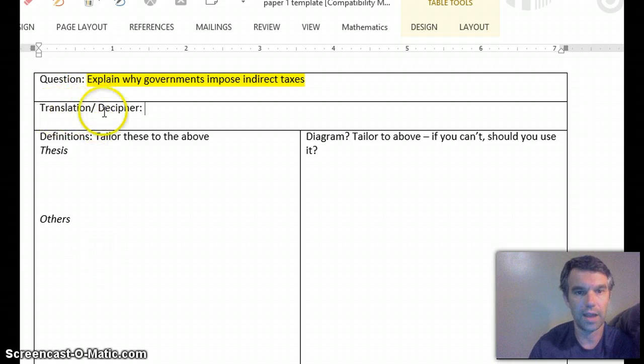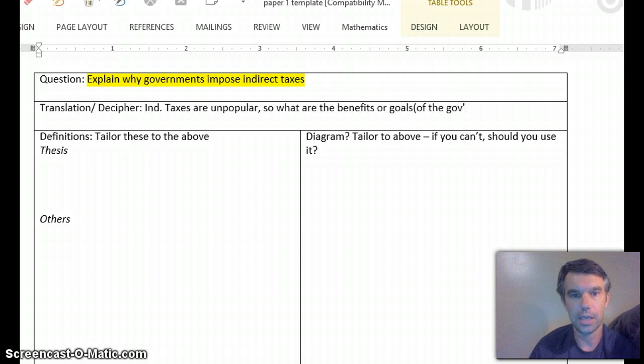So let's go down to where I have translation and decipher. Sometimes economics speak is really complex, and you have to break it down. I don't think this is one of those questions, so you don't really need to translate. But I think you do need to decipher. You need to say, what is it that they're really looking for here? Some red flags should go off that this is almost too easy. So what is it that they're really looking for? I deciphered it like this. Indirect taxes are unpopular. Nobody really wants them. So being economics, there's always cost and benefit. So if the cost is they're unpopular, what's the benefit for the government?